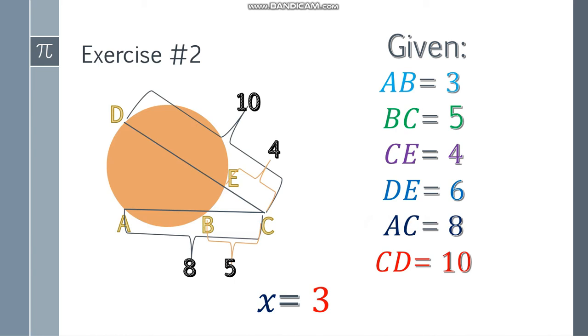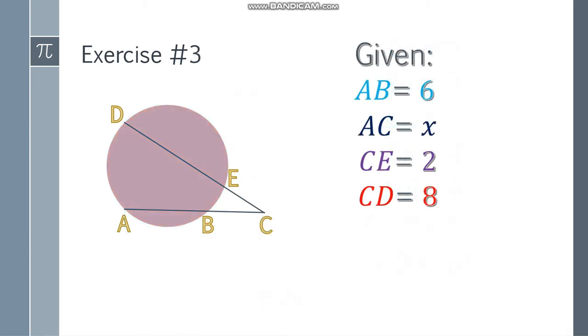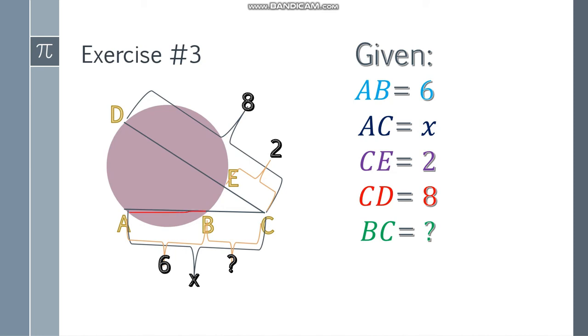Let's go to example number 3, the last example. What if AB equals 6, just the internal segment? AC we don't know, so that's x. CE is 2 and CD is 8. We need to find BC. We can write it as x minus 6, because the whole AC is x, so to find BC, subtract 6: x minus 6.